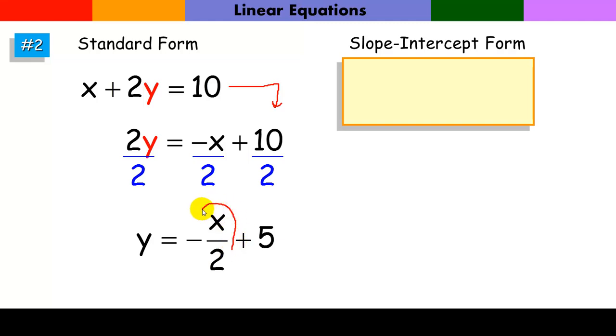Now one thing, there's a problem here. Some students would have a hard time understanding what the coefficient is on this. Well, understand that negative x over 2 is the exact same thing as negative 1 over 2 times x.